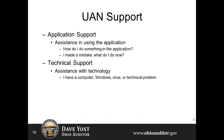When you call into UAN Support for application support or technical support, consider that application support is the how-do-I of using UAN software: how do I find something, how do I print something, how do I do something? Tech support is when you have a technical problem, like trying to print a PDF that's not coming out on the printer, or the print on your screen is tiny.